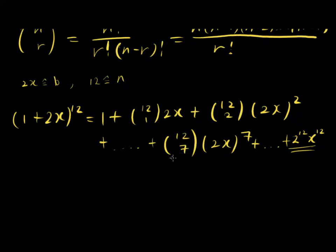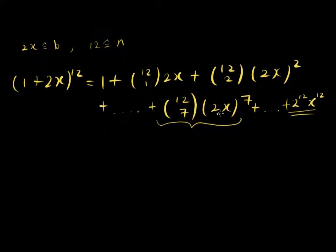Anyway, having said that, our main objective here in this question is to find the coefficient of x to the power of 7. So basically we can rewrite the term into this form here, where we split this bracket into two parts: one is 2 to the power of 7, and then the other one is x to the power of 7.